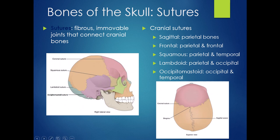Connecting the occipital bone to the temporal bone is the occipitomastoid suture. The mastoid process is on the temporal bone, so occipitomastoid connects the occipital to the temporal bones.